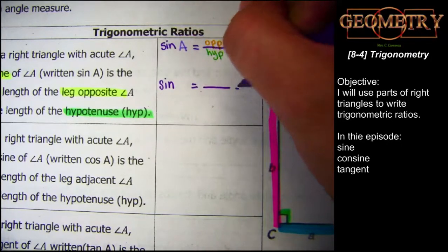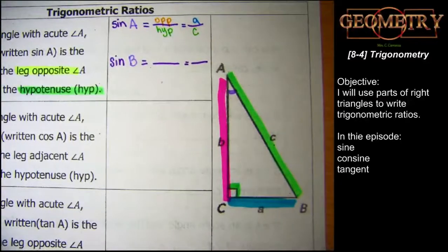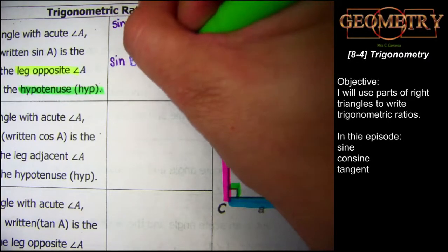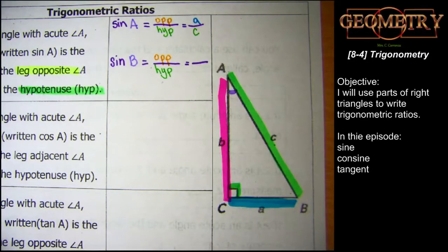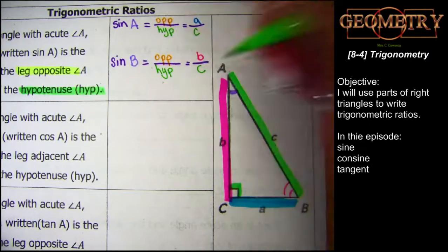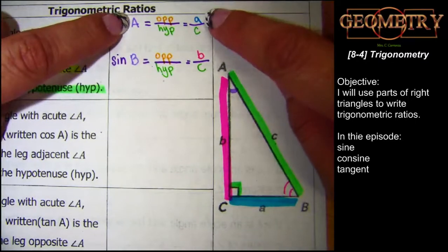We're going to look at the same format but from angle B's point of view. Regardless of which angle, the ratio is the same — sine is always opposite over hypotenuse, abbreviated HYP because it's all about the hype. The side opposite angle B is lowercase b, and the hypotenuse is always c. Do you see a pattern? It's always over c — the hypotenuse is always c, and the angle and the side match because it's opposite.